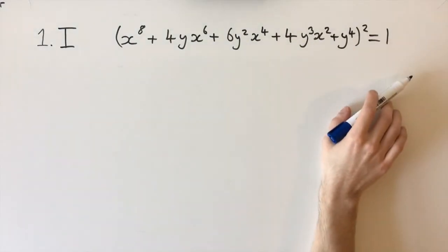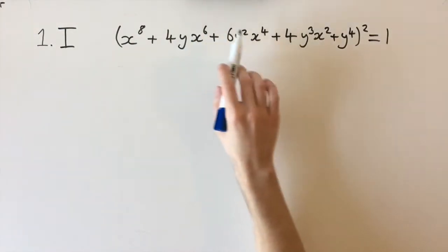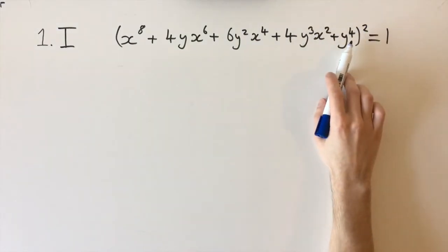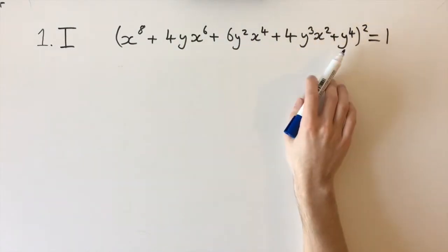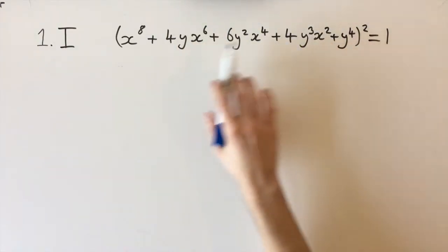The powers are going down in factors of 2. If we just look at the terms for y, we have y, y squared, y cubed, y to the power of 4. They're going up in a pattern of 1. This should give you a hint that we're looking at an expansion here.